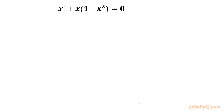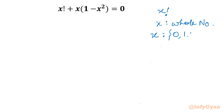Let's get started by writing the domain of the equation. As you can see clearly, x factorial is involved. That means x must be a whole number, because I am taking x as a positive integer including 0 — not fractional values. So x is a whole number, meaning x may be 0, 1, 2, up to infinity — any positive integer including 0. Now I will write what factorial notation means.